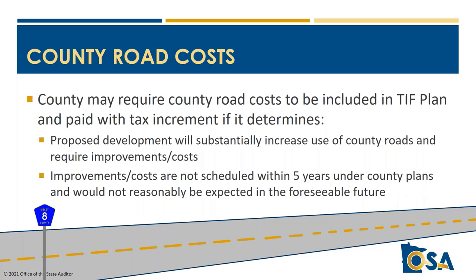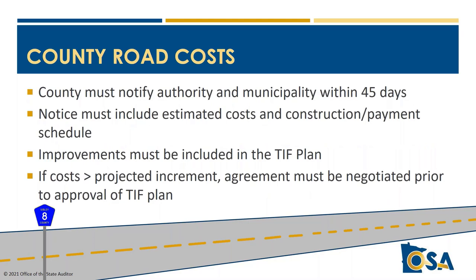One practical option: counties can require certain county road costs to be included in the TIF plan and paid from tax increments. The county must determine that the proposed development will substantially increase use of county roads requiring improvement, that those improvements are not scheduled within five years under any current county plans, and would not occur in the reasonably foreseeable future. The county must exercise this option by notifying the authority within 45 days — which can create a timing issue since authorities only need to give 30 days' notice.